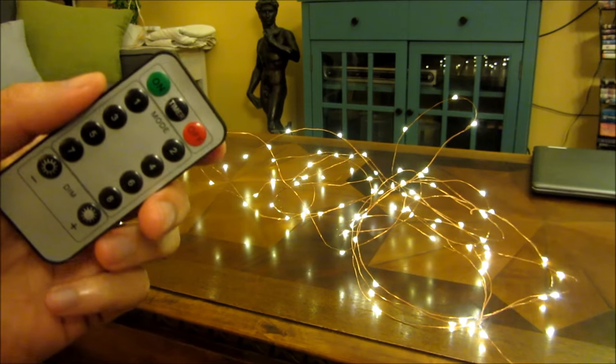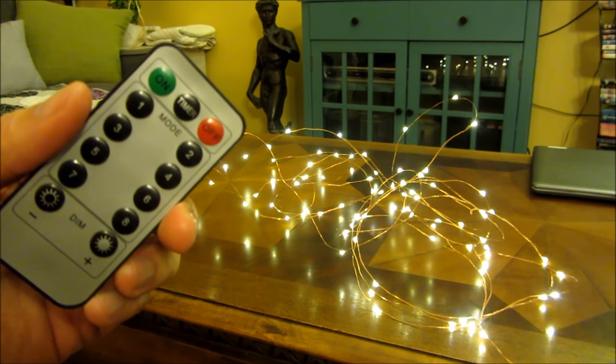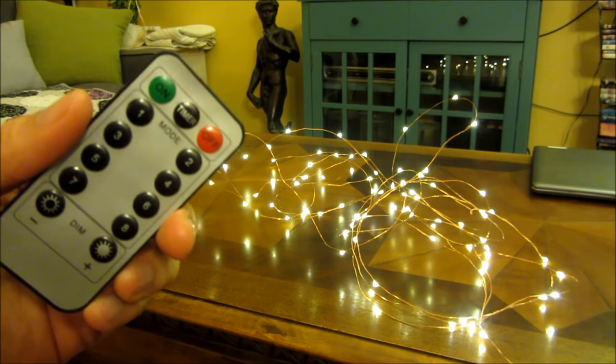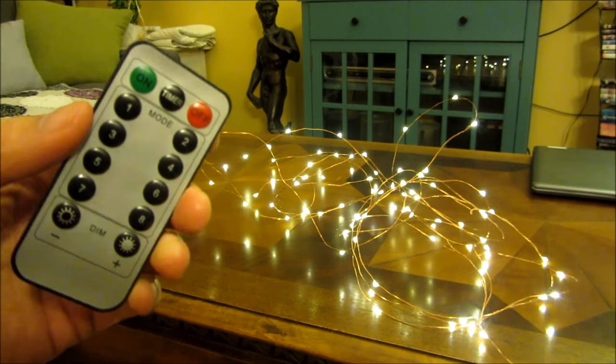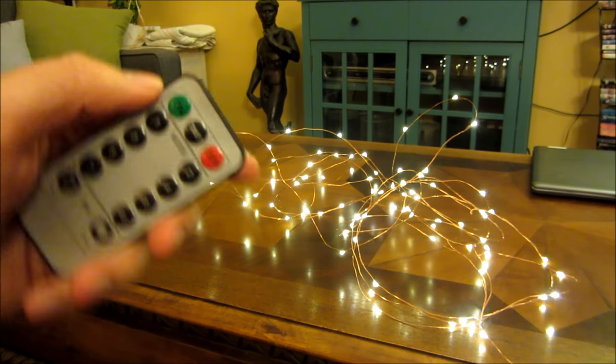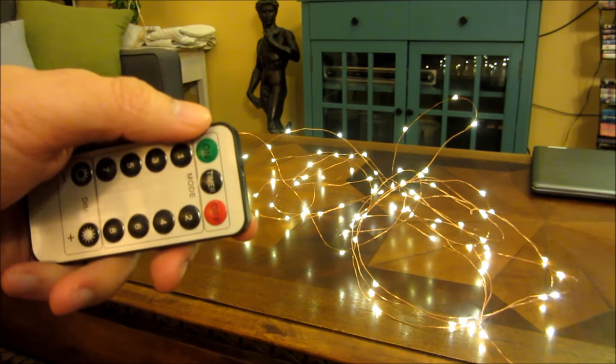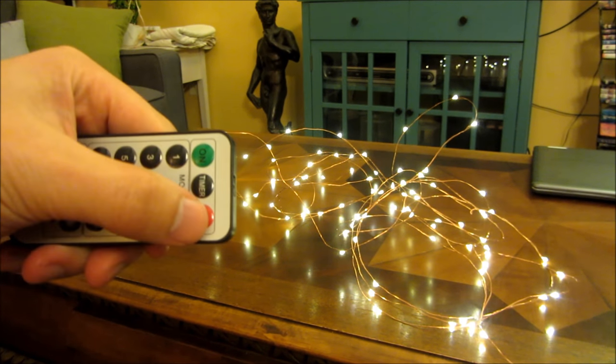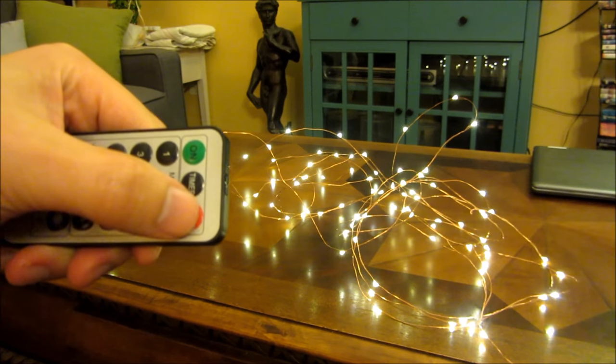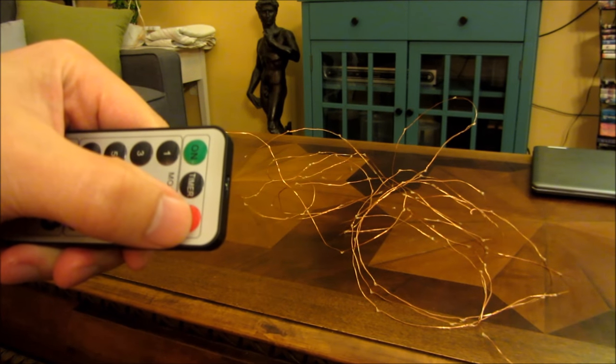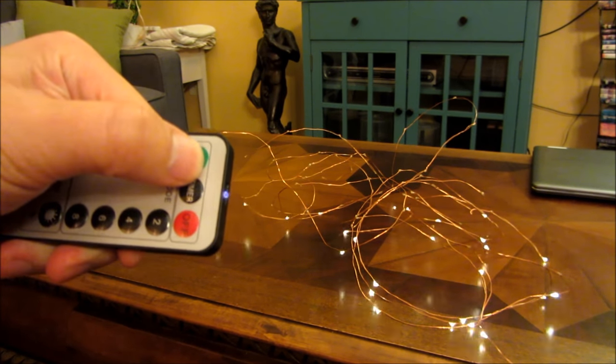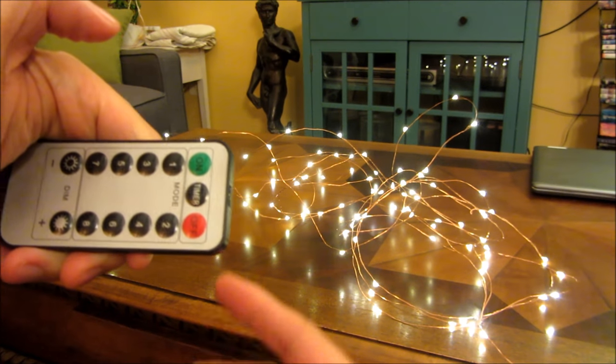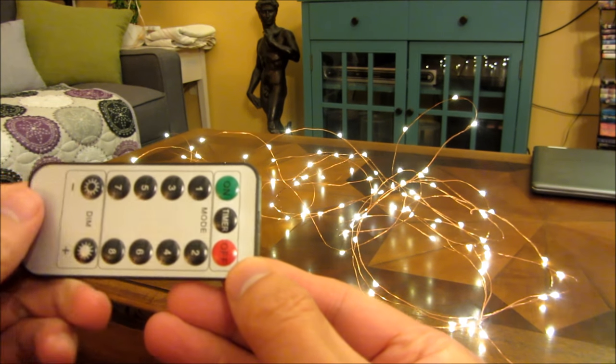So let me demo the remote control first and give you an up-close view of the lights and the wiring itself later. This is an infrared remote control, so it requires a line of sight. You'll notice I will be aiming at the plug here, shutting it off and turning it on. And I have a bunch of other settings.